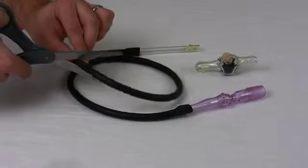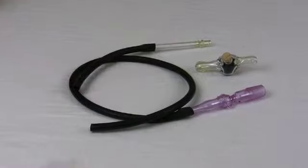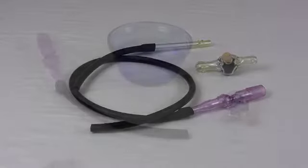To attach your inline carbon filter, simply cut your latex hose in half. Additionally, you can purchase an extra latex hose if you don't want to cut your hose in half.